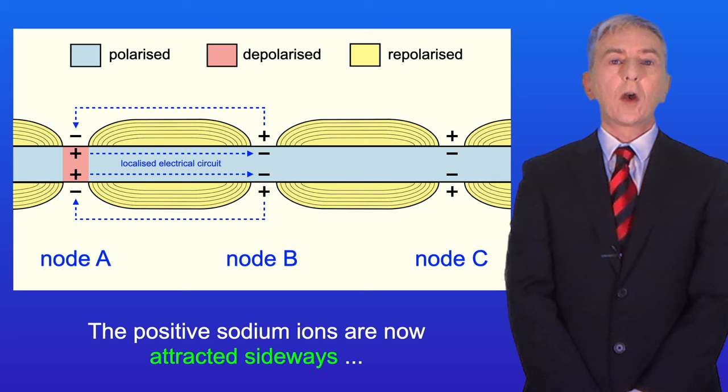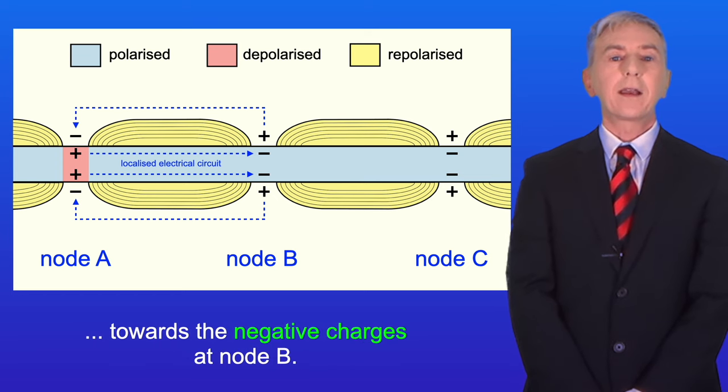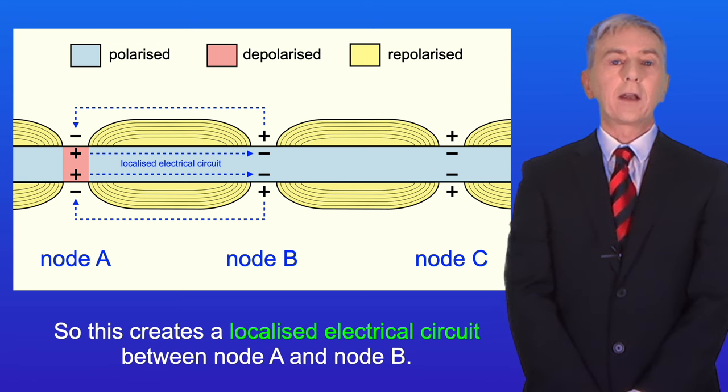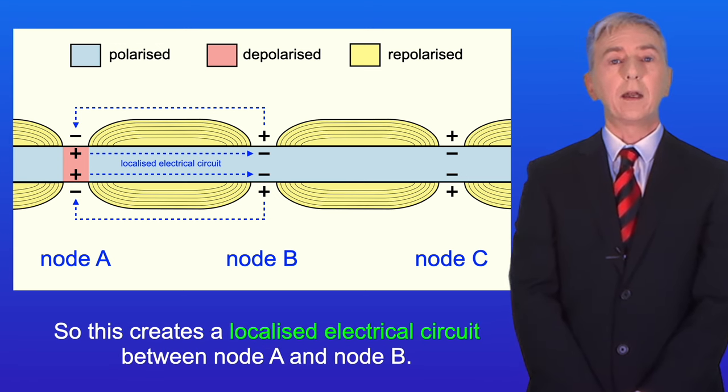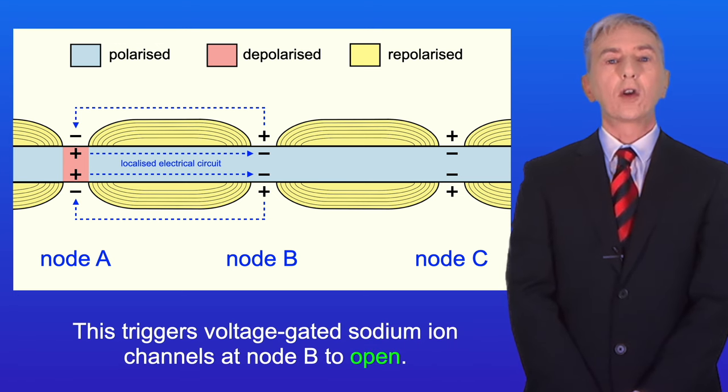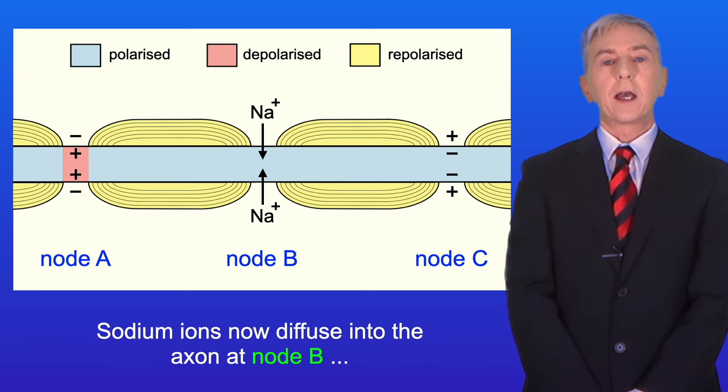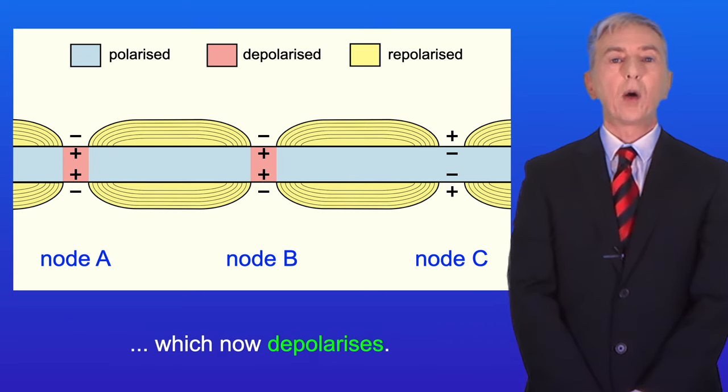The positive sodium ions are now attracted sideways towards the negative charges at node B. So this creates a localized electrical circuit between node A and node B. This triggers voltage-gated sodium ion channels at node B to open. Sodium ions now diffuse into the axon at node B, which now depolarizes.